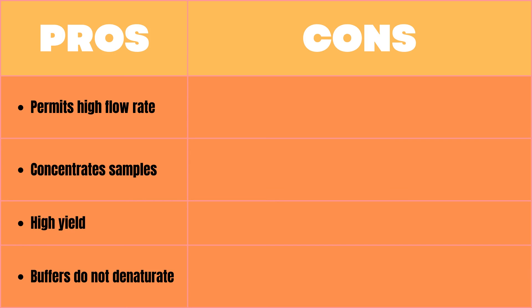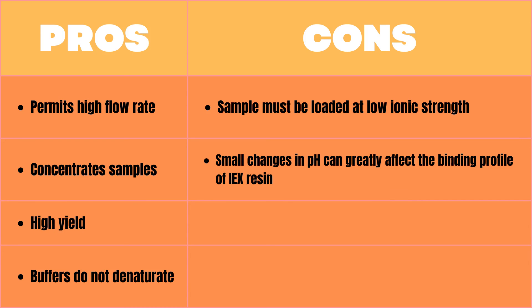However its cons include that the sample must be loaded at low ionic strength. Also small changes in pH can greatly alter bonding between the resin beads and the proteins in our sample. Finally particle size also greatly influences resolution.